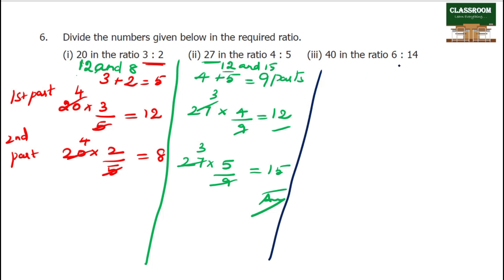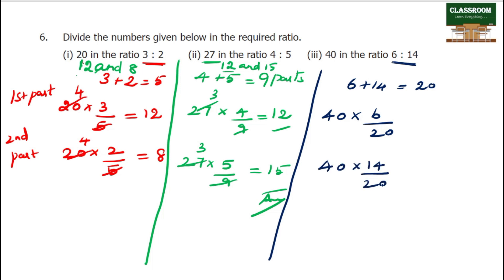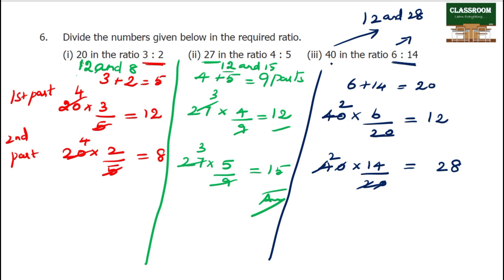40 divided in the ratio 6 is to 14. 6 plus 14 equals 20. First number: 40 into 6 by 20. Second part: 40 into 14 by 20. 6 twos are 12, 14 twos are 28. Every answer: 12 and 28.